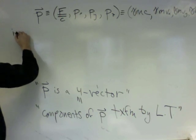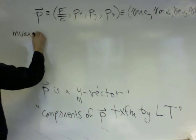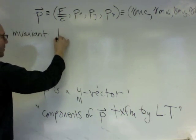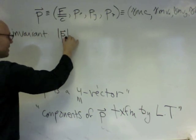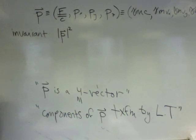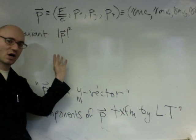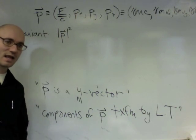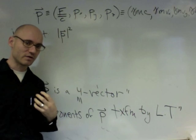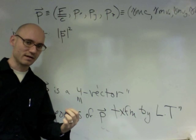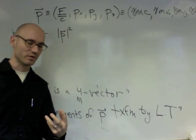So here, the conserved quantity, or the invariant, there's going to be an invariant for the four momentum, which I'm going to draw suggestively like this. I'm going to draw it as the absolute value of P squared.